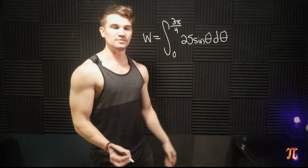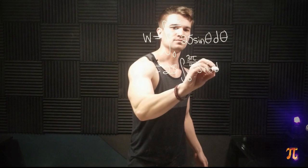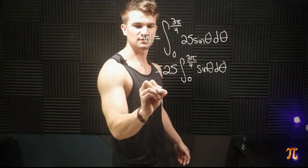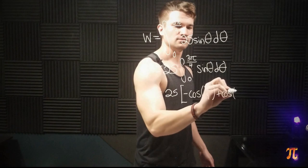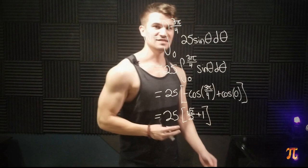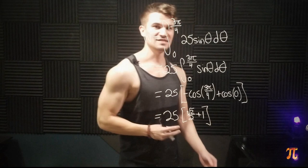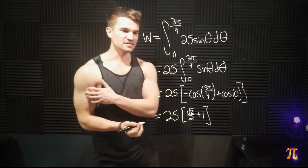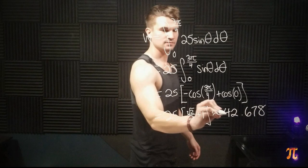This is a simple integral to compute. We can take the 25 out front. The antiderivative of sine is negative cosine, so we're left with that evaluated from zero to 3π/4. This comes out to 25 times (√2/2 + 1), which is the exact work done by the bicep over the entire rep — approximately equal to 42.678 foot-pounds.